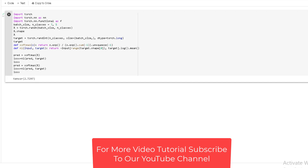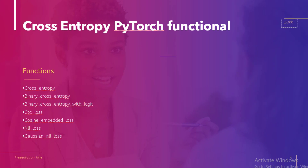Let us move to the next topic: Cross Entropy Loss PyTorch functional. The functions available include cross entropy, binary cross entropy, binary cross entropy with logits, CTC loss, cosine embedded loss, NLL loss, and Gaussian NLL loss. We will explain all these functions one by one. Firstly, cross entropy is used to calculate the difference between the input and the output variable.